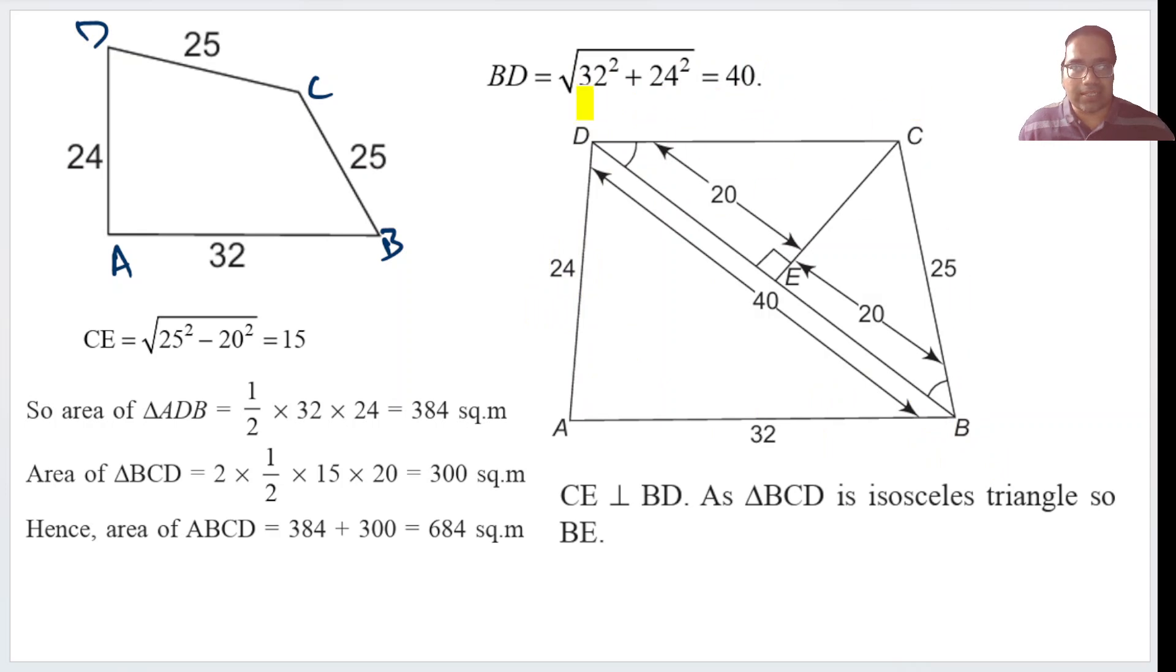Now BCD, this is an isosceles triangle because this is 25 and this is also 25. If I draw a perpendicular from C to BD, it will touch BD exactly at the midpoint. That is why BE is equal to 20. Similarly, DE is also equal to 20.